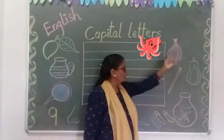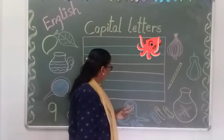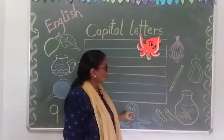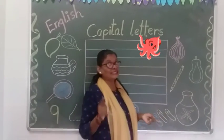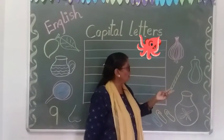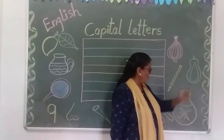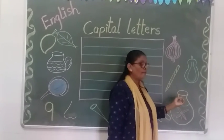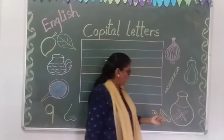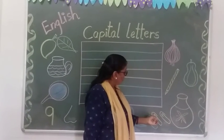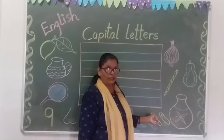And the next letter gives us O — O for onion, O for octopus. Now the next letter is P — P for papaya, P for pot, and P for pea.